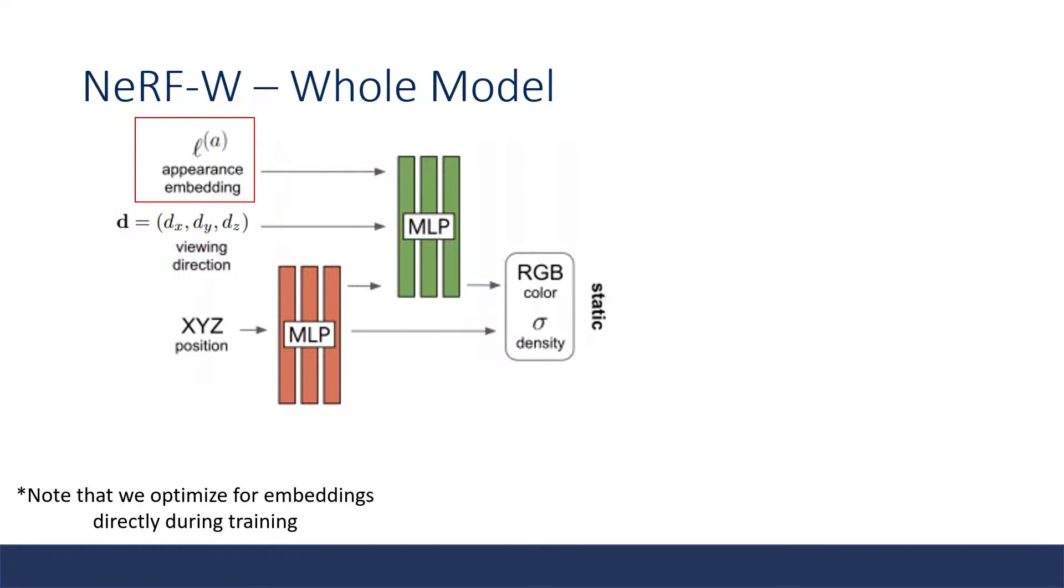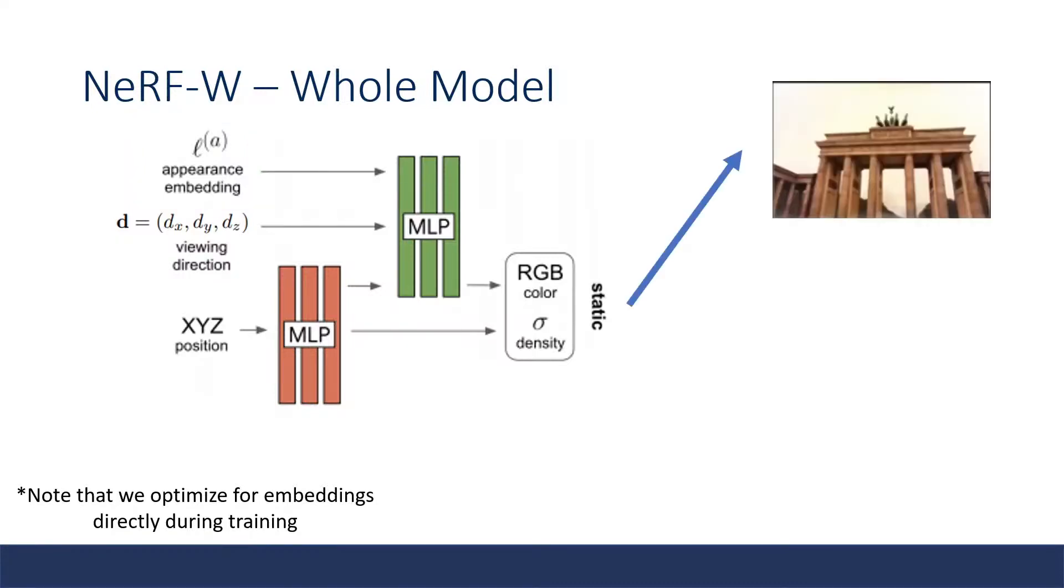As a result, NeRF-W introduces a new appearance embedding vector and this stores information about the static image, things like lighting, photometric effects, properties, etc. This allows our model output to change depending on the image conditions. This appearance embedding is directly optimized during training and is not the output of any encoder like ResNet. Using this appearance embedding, we obtain a static output to generate an image of our static object. But we have not addressed another part of the problem: the transient objects such as tourists.